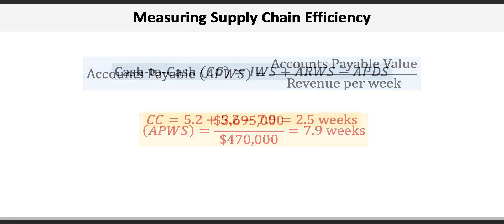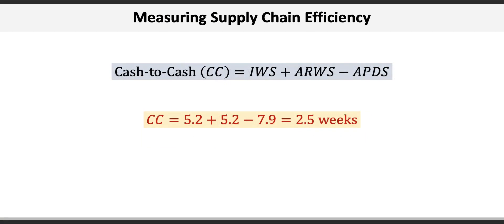Now we can compute the cash-to-cash ratio, which equals IWS plus ARWS minus APWS, which is 5.2 weeks plus 5.2 weeks minus 7.9 weeks, to give us a positive 2.5 weeks.